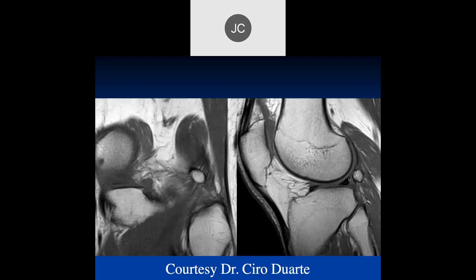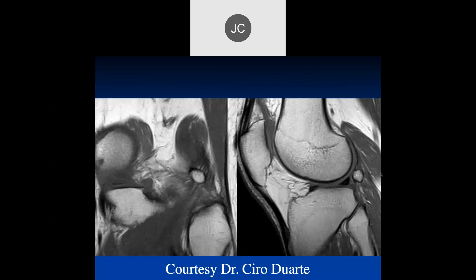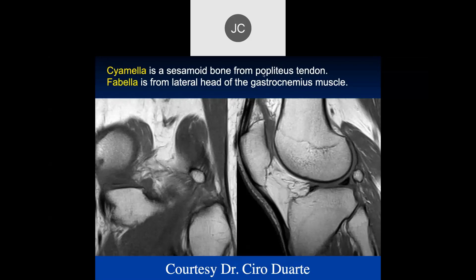On these coronal and sagittal T2 images, we have another accessory ossicle, more inferior than where we typically see the fabella. Both are on the lateral side. Looking at the fiber direction going obliquely — this is actually in the popliteus tendon, and that ossicle of the popliteus tendon is called a cyamella.